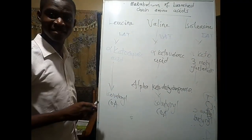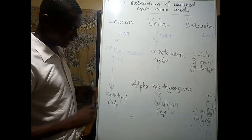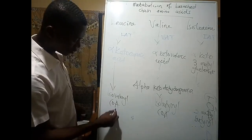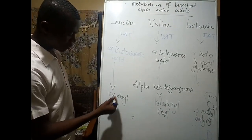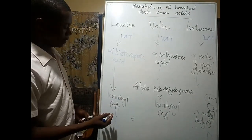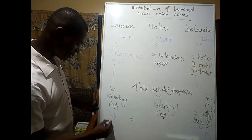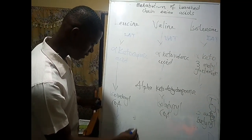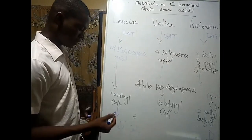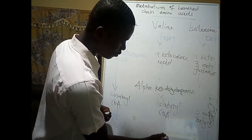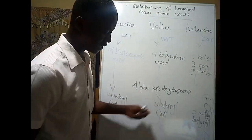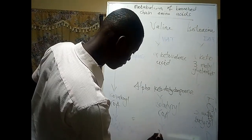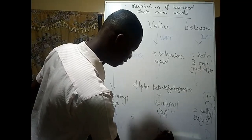The final step is dehydrogenation. When we dehydrogenate isovaleryl-CoA, we get acetyl-CoA. When we dehydrogenate isobutyryl-CoA, we get propionyl-CoA.